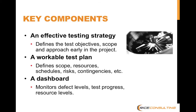Some key components to make this happen: first, you need an effective test strategy that defines your overall objectives — the scope and approach you can define early in the project. The strategy defines what you want to achieve. Then you need a workable test plan that defines the scope, resources, schedules, risk, and contingencies — basically the 'how we're going to get there' plan. Neither the strategy nor the plan needs to be a big elaborate document. And you need a way to measure how you're doing — that's where the dashboard comes in. It monitors your critical defect levels, test progress, and resource levels.